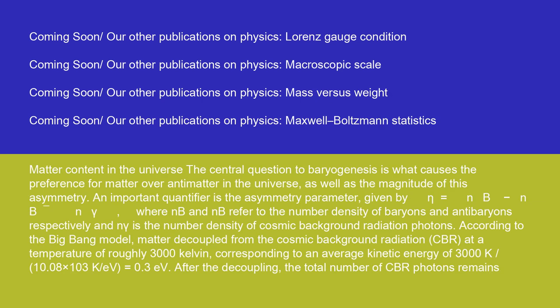The central question of baryogenesis is what causes the preference for matter over antimatter in the universe, as well as the magnitude of this asymmetry. An important quantifier is the asymmetry parameter, given by η = (N_b − N_b̄)/N_γ, where N_b and N_b̄ refer to the number density of baryons and antibaryons respectively, and N_γ is the number density of cosmic background radiation photons. According to the Big Bang model, matter decoupled from the cosmic background radiation (CBR) at a temperature of roughly 3000 Kelvin, corresponding to an average kinetic energy of 3000 K / (1.08×10³ K/eV) = 0.3 eV.